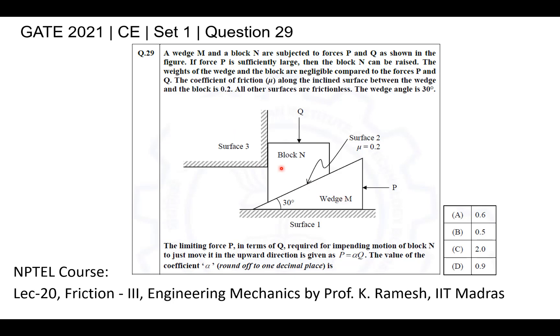A wedge M and a block N are subjected to forces P and Q as shown in the figure. If force P is sufficiently large, then the block N can be raised. The weights of the block and the wedge are negligible compared to the forces P and Q. The coefficient of friction along the inclined surface between the wedge and the block is 0.2. All other surfaces are frictionless, and the wedge angle is 30 degrees.